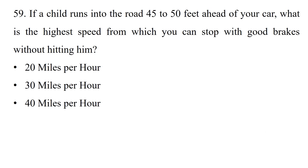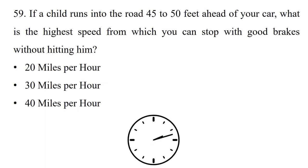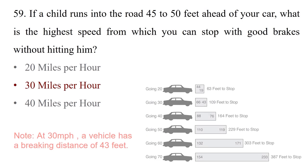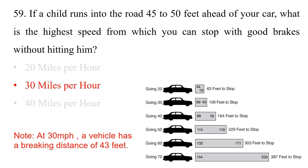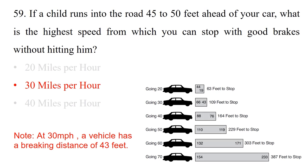Question: If a child runs into the road 45–50 feet ahead of your car, what is the highest speed from which you can stop with good brakes without hitting him? Option 1: 20 miles per hour. Option 2: 30 miles per hour. Option 3: 40 miles per hour. The answer is option 2: 30 miles per hour. At 30 miles per hour, a vehicle has a braking distance of 43 feet.